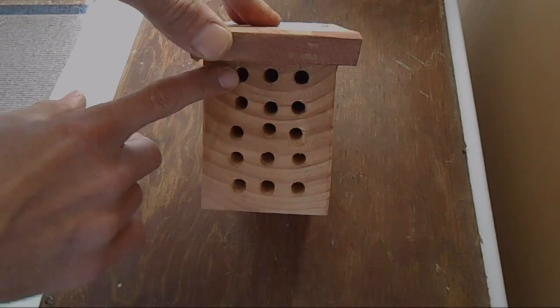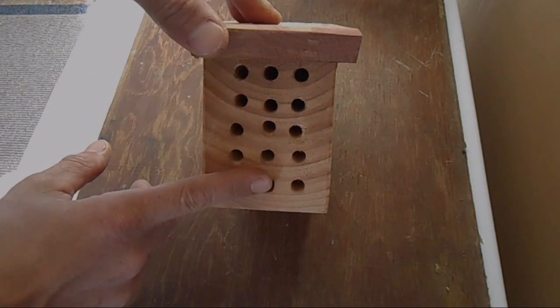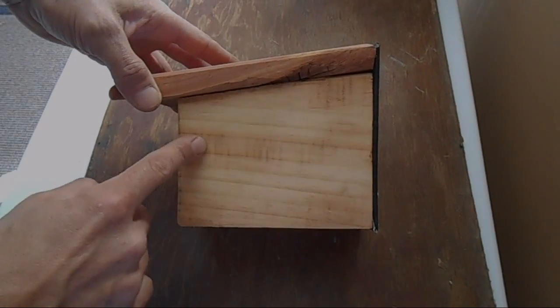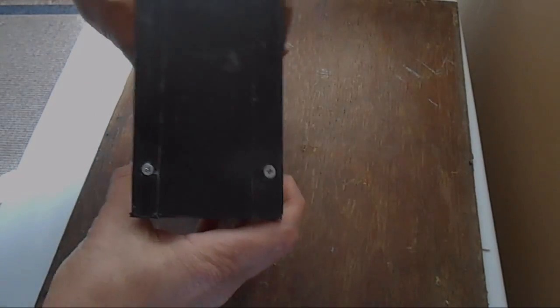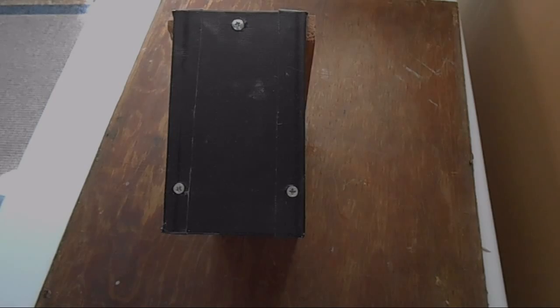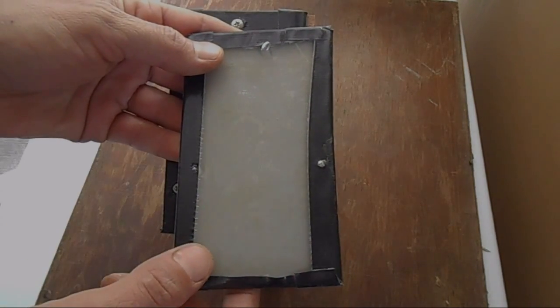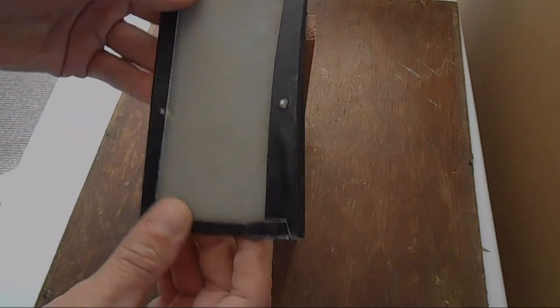These are all 3/8 holes, and they're 6 inches deep. My block is 6 inches deep. And then on the back, I basically just took a piece of plexiglass, as you can see here. And I covered it with Gorilla Tape.